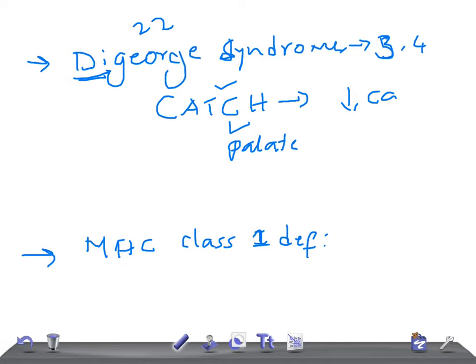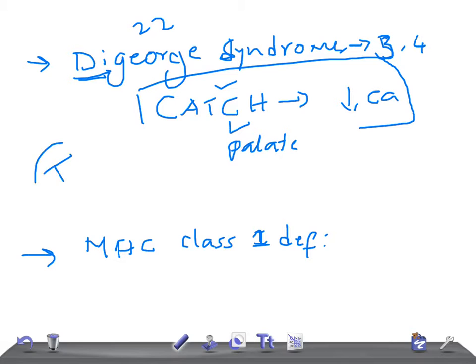So DiGeorge Syndrome involves the 3rd and 4th pharyngeal pouches, and the clinical features are summarized by CATCH: cardiac involvement, abnormal facies, thymic aplasia, cleft palate, and hypocalcemia or hypoparathyroidism. Because the thymus is gone, T cells are gone — just remember it like that. So in Selective T-cell Deficiency, the two diseases are DiGeorge Syndrome and MHC Class 1 Deficiency.